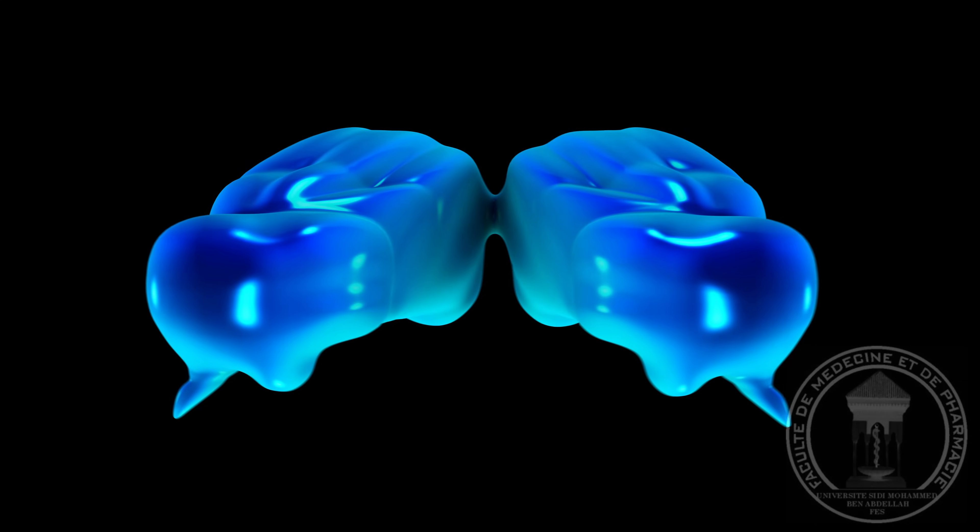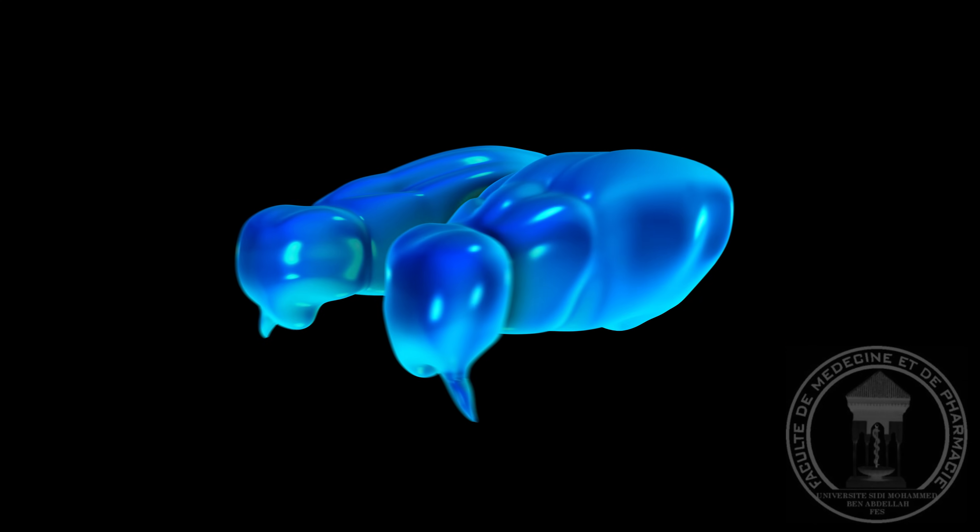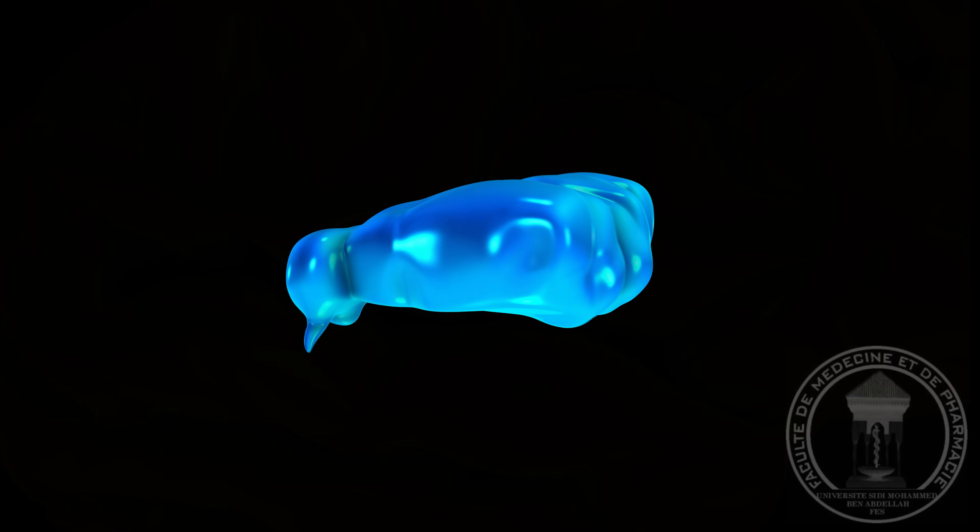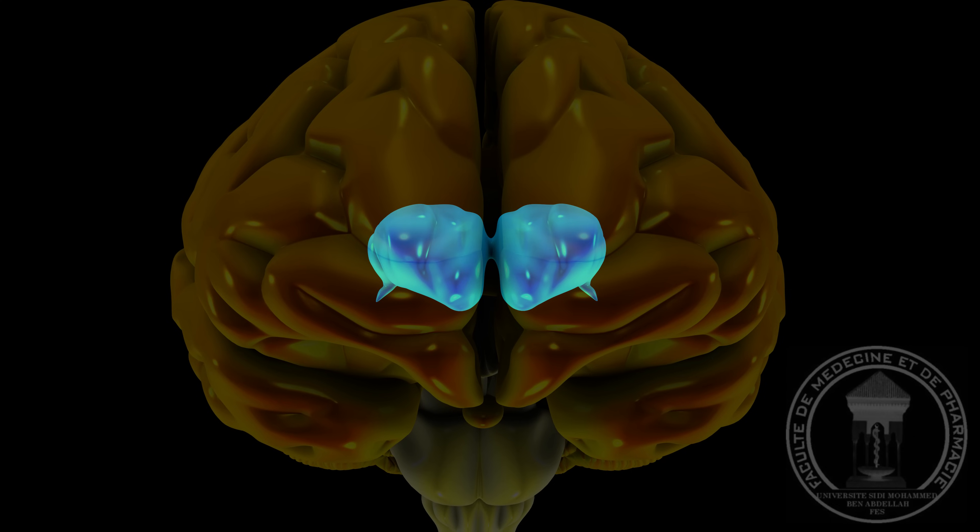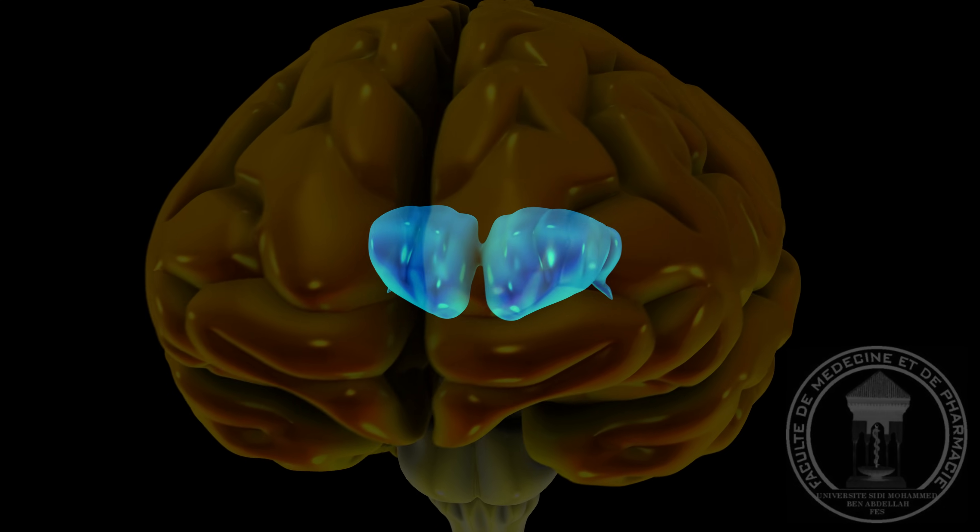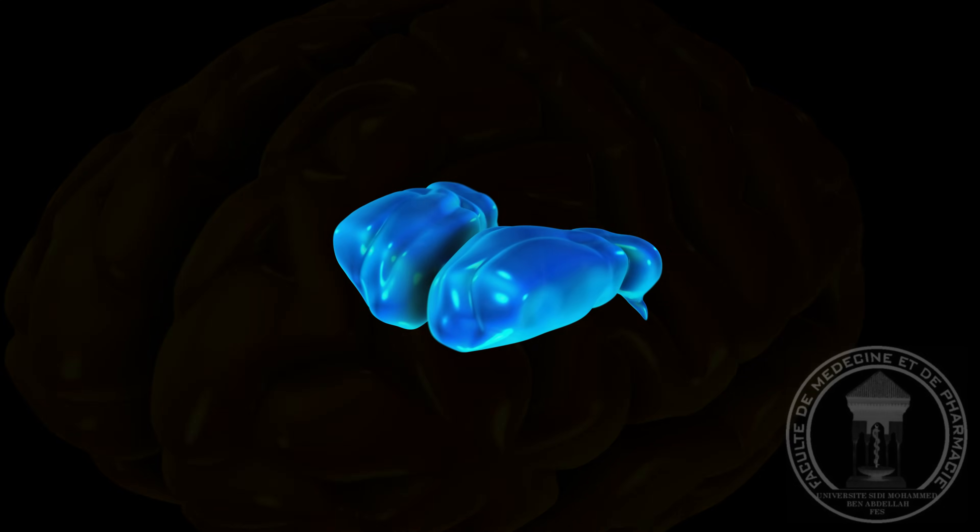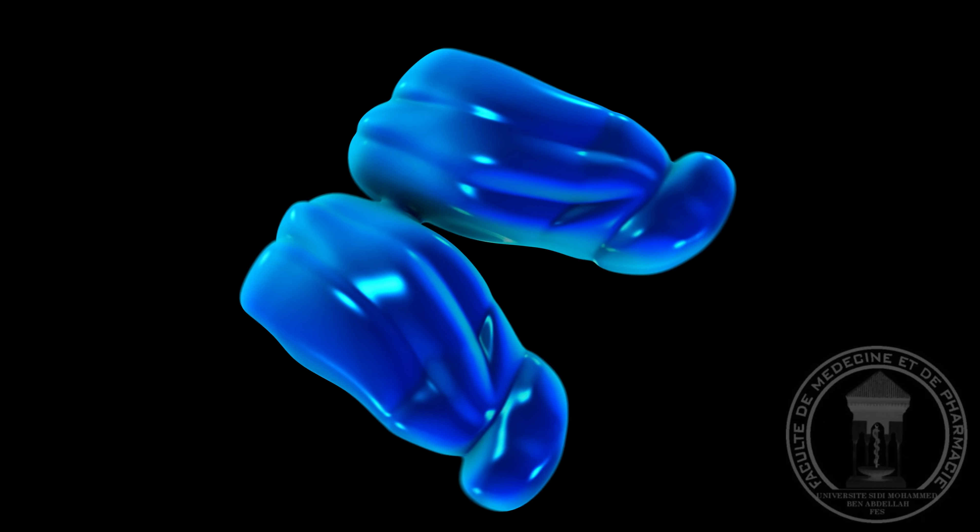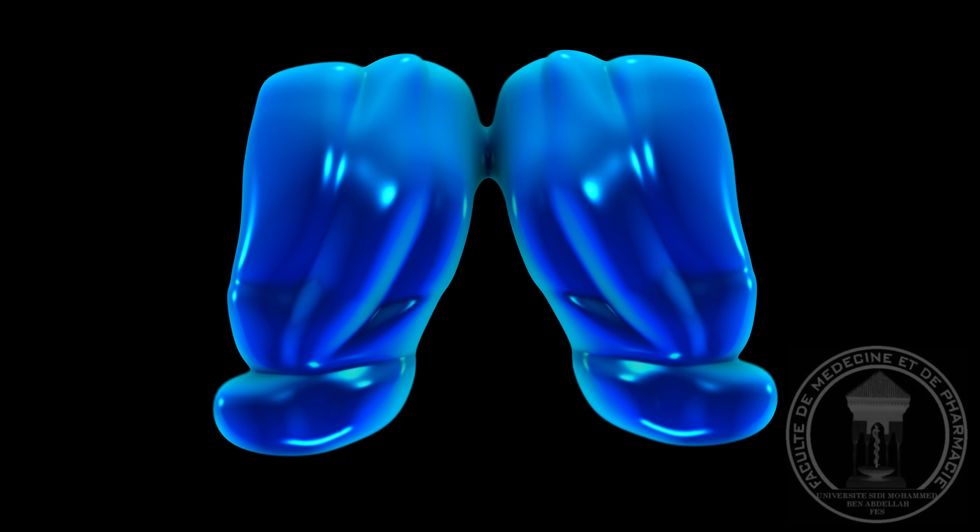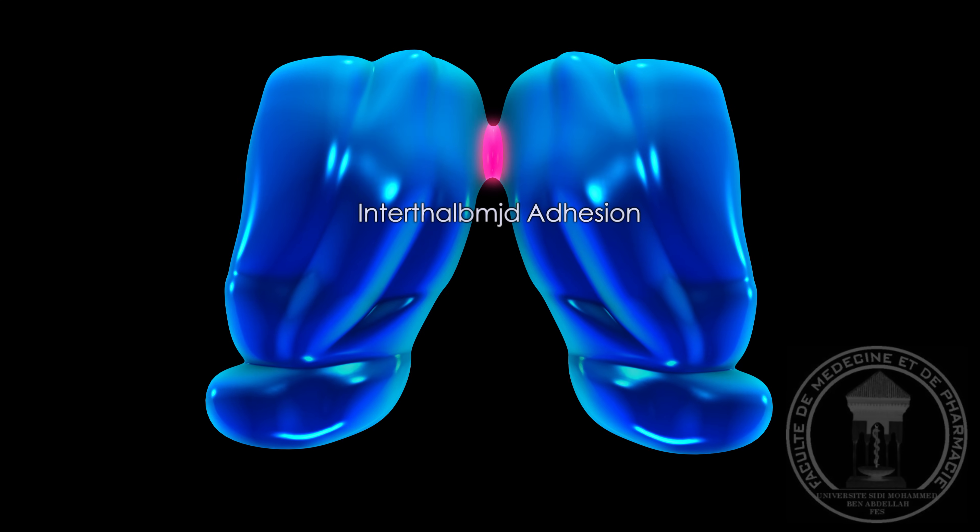The thalamus is made up of two masses of gray matter, right and left, each taking an ovoid shape. These two parts are often joined together in the center by the interthalamic adhesion.